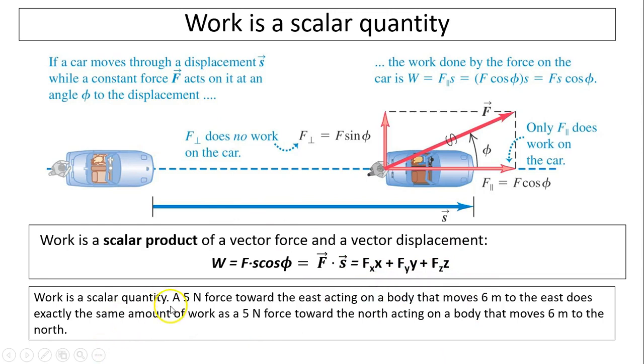Work is a scalar quantity, which means work is disregard of directions. For example, a five newton force toward the east acting on a body that moves six meters to the east will have the same amount of work as five newtons toward the north acting on a body that moves six meters to the north. The direction doesn't matter.